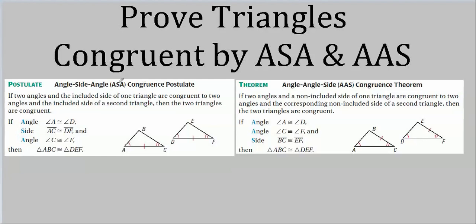The important part was that the angle between the two congruent sides was the congruent angle — it couldn't be angle side side or side side angle, it had to be side angle side. In this case it has to be the side in between the two congruent angles. For instance, this postulate doesn't say that if we have two congruent angles and any old congruent side then they're congruent — that's a theorem, and that's over here.